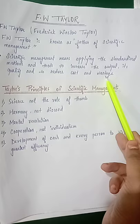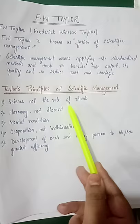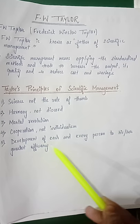Now we will learn Taylor's principles of scientific management: science not rule of thumb, harmony not discord, mental revolution, cooperation not individualism, and development of each and every person to his or her greatest efficiency.